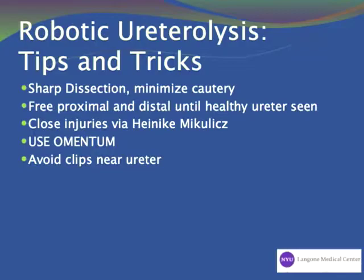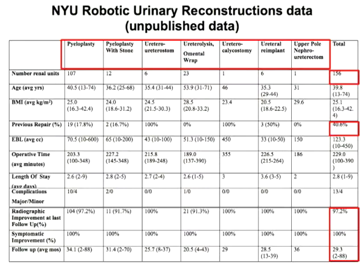Here are some unpublished data from our NYU experience with robotic urinary reconstruction. Over a three-and-a-half-year period, we performed 156 cases; 40% were secondary repairs. We had a 97% success rate radiographically and a 100% symptomatic success rate, with a follow-up of 21 months over a 2-year period.